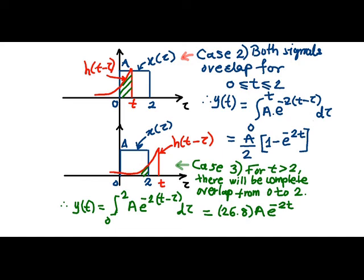Further, h(t - τ) will go on shifting towards the right direction. As it crosses t equal to 2, there will be complete overlap from 0 to 2. Thus the output of convolution for this overlap region will be computed as an integration limit from 0 to 2, substituting x(τ) and h(t - τ). Solving the integration and substituting the limits of integration, it results into this answer.